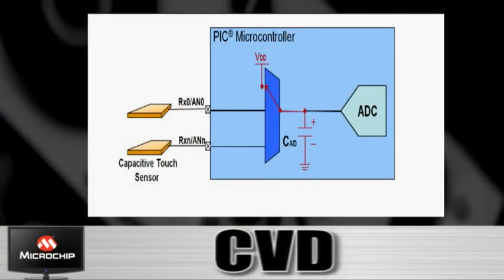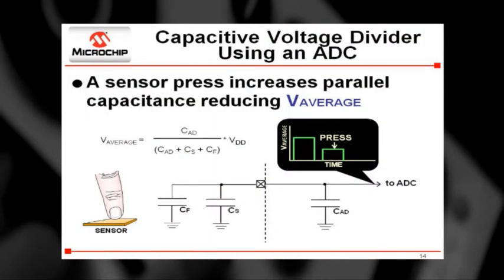The final method is the CVD, or charge voltage division method. Here, we take a known capacitor — such as the input capacitor on the ADC — charge it to a fixed voltage, and then when it's put in parallel with the external unknown capacitor, we get a voltage reduction. How far that voltage moves tells us how big that external capacitor is. For detecting a touch, when a person touches that external pad, the unknown capacitance goes up, and as a result our measured voltage goes down. The nice thing about this is that it uses an ADC, so any microcontroller with an ADC on board can be used.